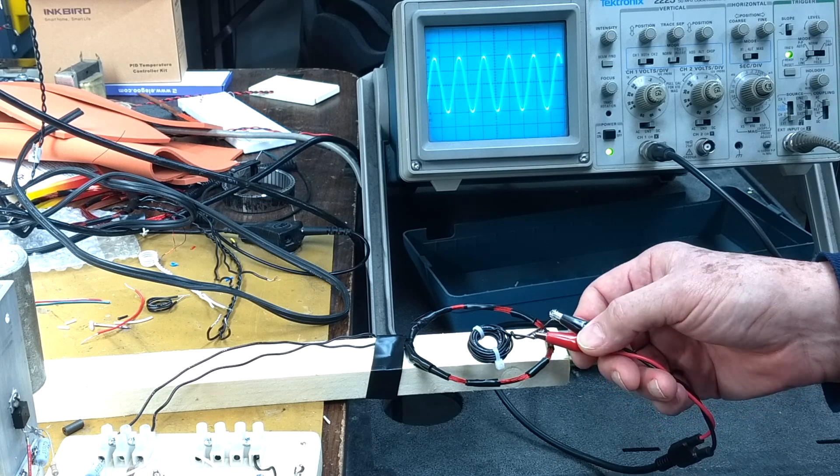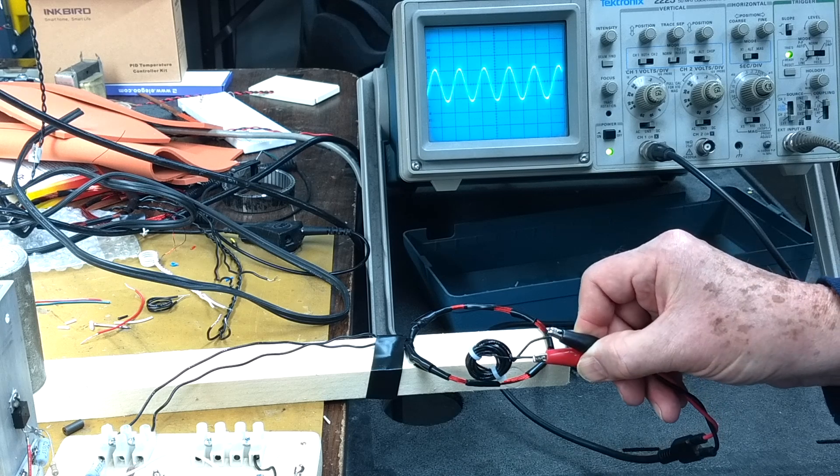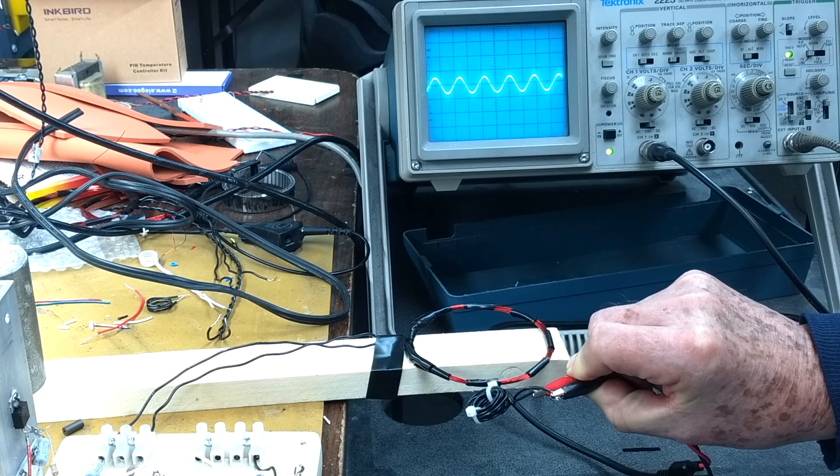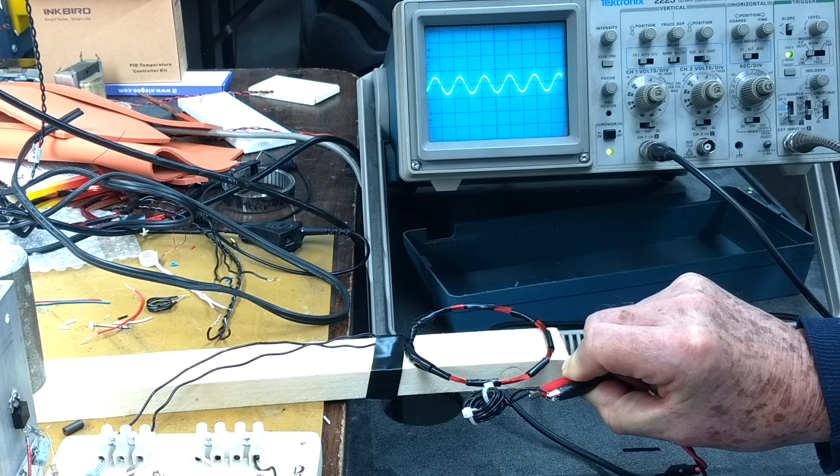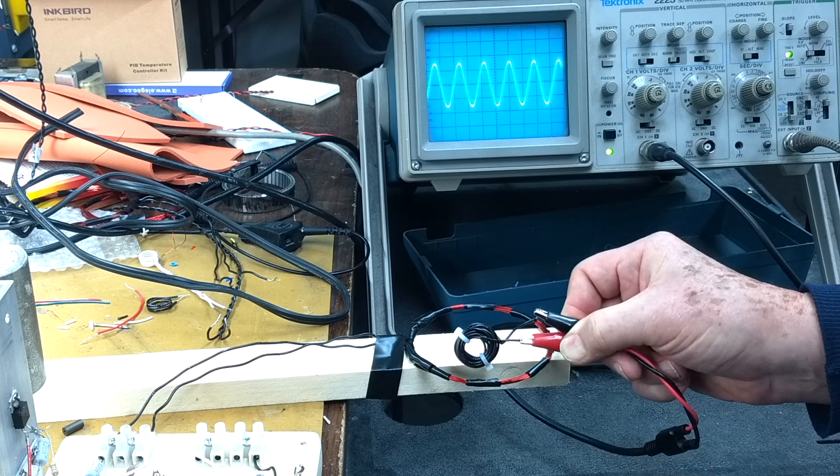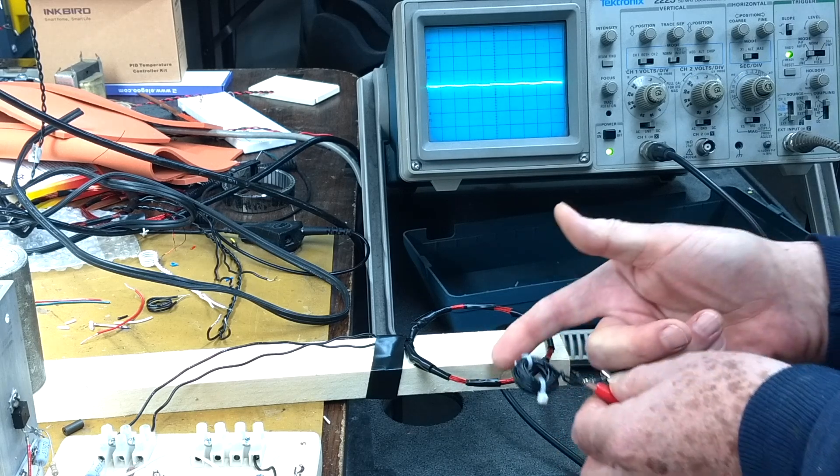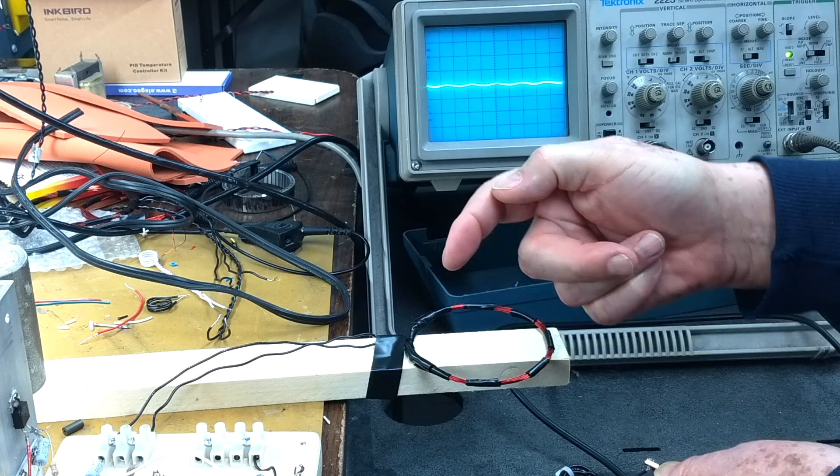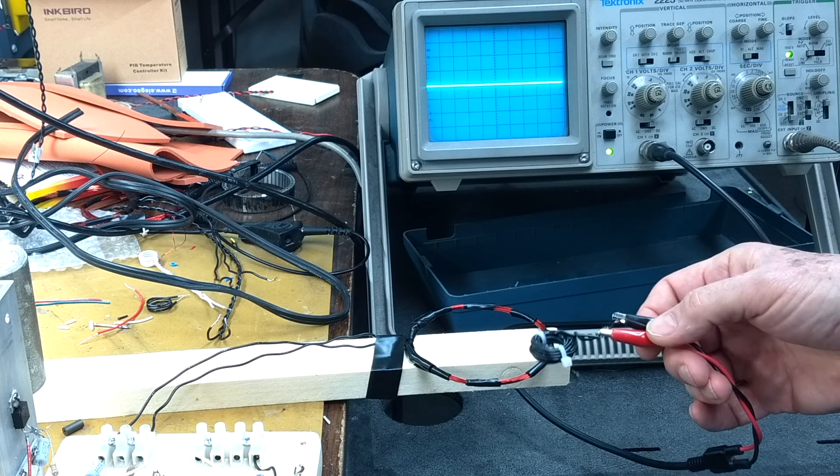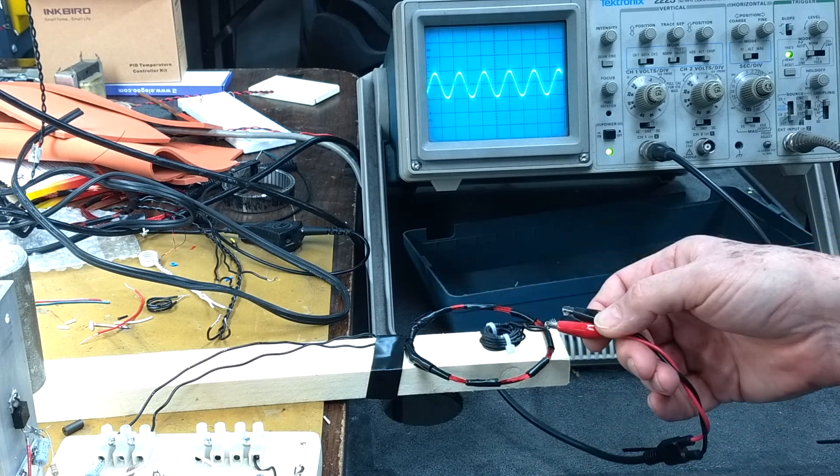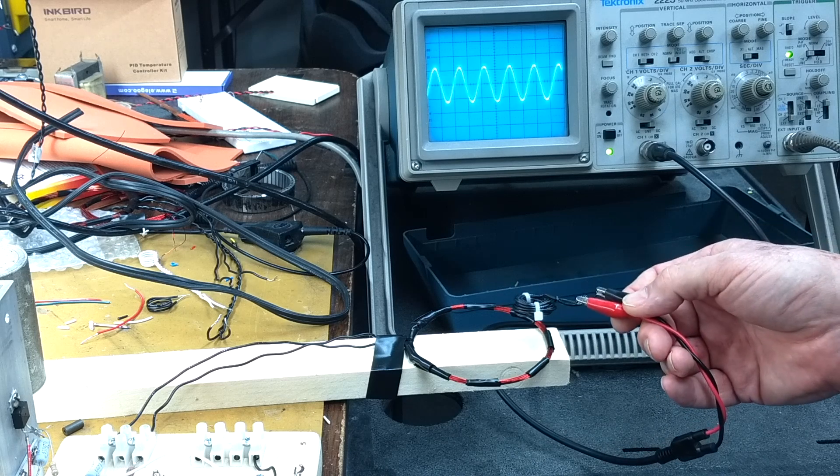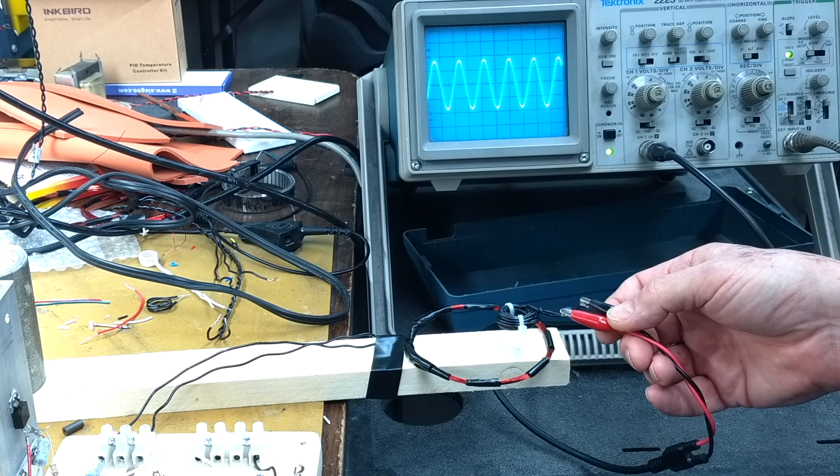So we can sort of get an idea of the shape of the field. Now if I tilt the coil, the pickup coil, as we go around, you see the pickup voltage did not change polarity this time. So that tells us the field is coming out here, going around and back in the bottom. So with a pickup coil like this, we could actually map the magnetic field and get a feel for what it looks like.